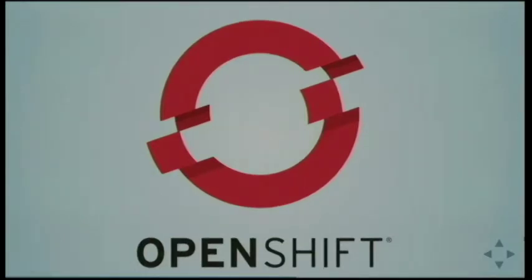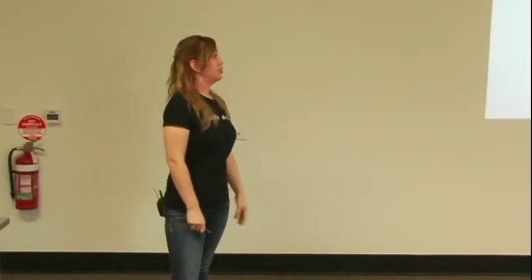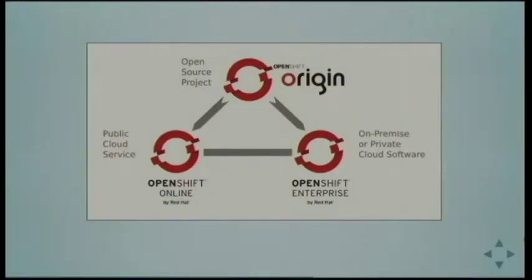The PaaS by Red Hat is called OpenShift — though the word is actually an overloaded term meaning three different things. OpenShift Origin is the open source project on GitHub, Apache 2 licensed. Currently written in Ruby, but they're working towards OpenShift V3 which will be architected around Docker and Kubernetes and written in Go.